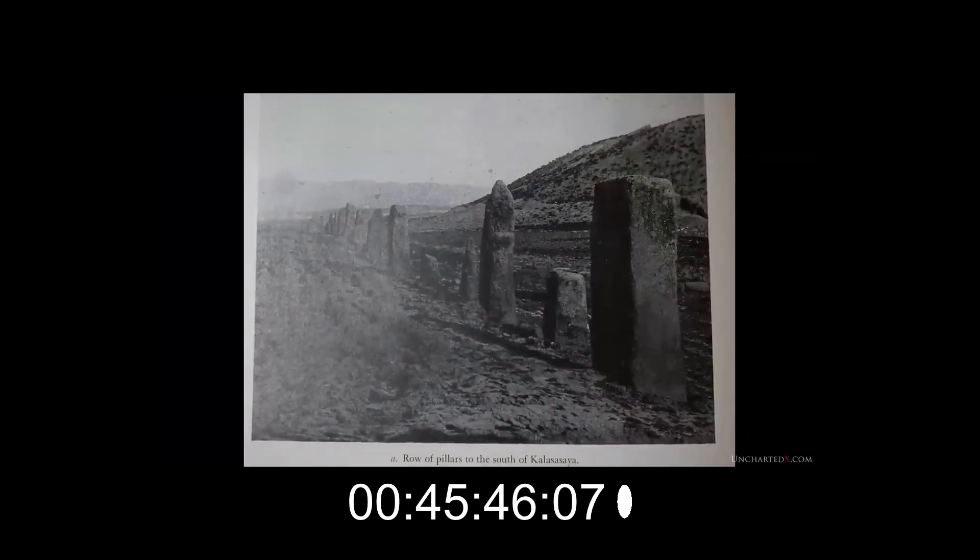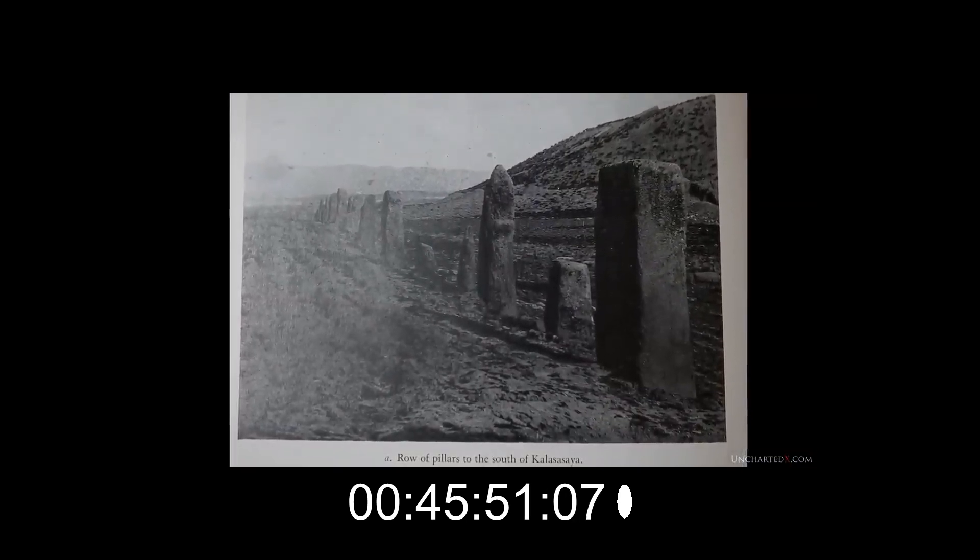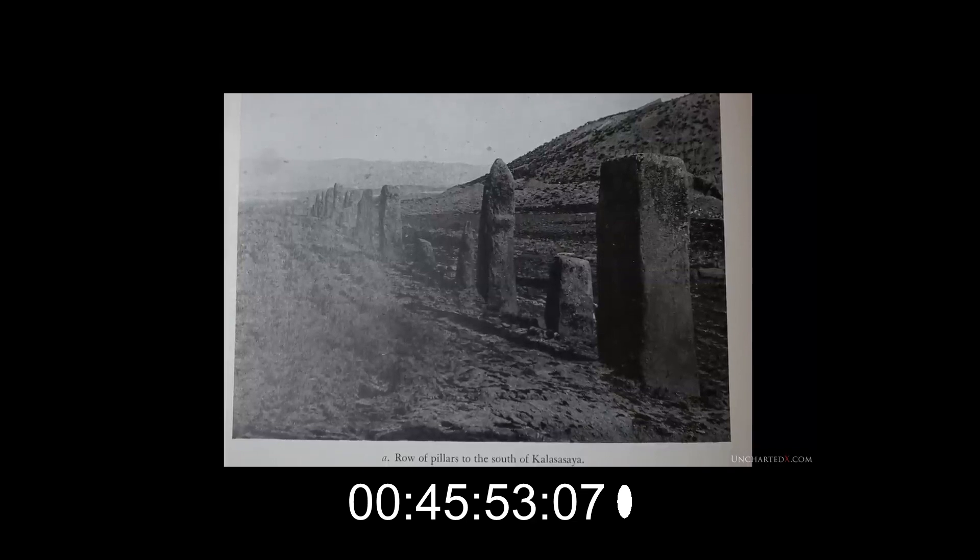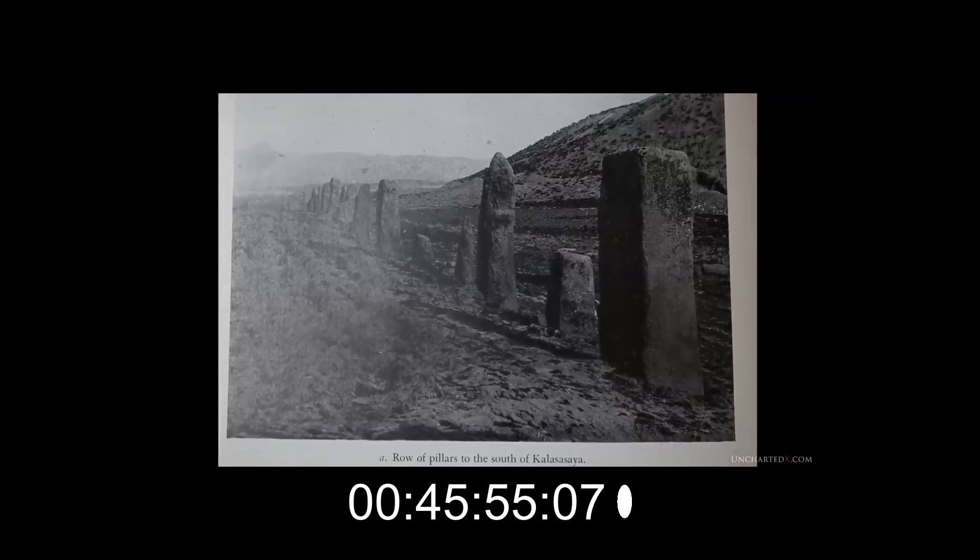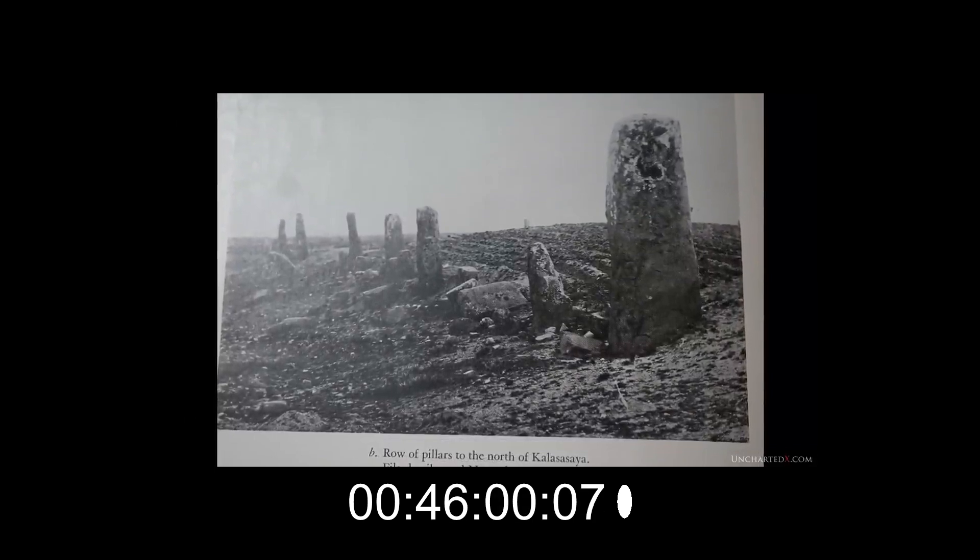It turns out that the structure also aligns with the locations for the sunsets on the solstices, making it undeniable that the Kalasasaya is absolutely a solar observatory and not just some sort of coincidence, but this discovery would only be made long after Posnansky had passed away.